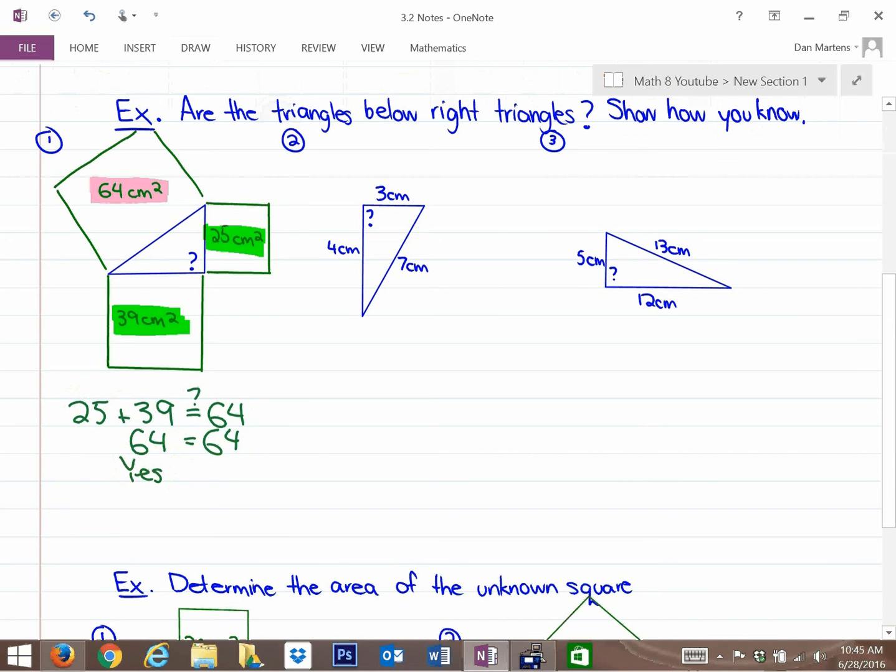In this next question, these two side lengths are 3 and 4 centimeters, and this side length is 7 centimeters. So is this a right triangle? Initially, you might think that it is, because 3 plus 4 is 7. But the Pythagorean relationship talks about the areas of the squares on the sides of the particular triangle itself.